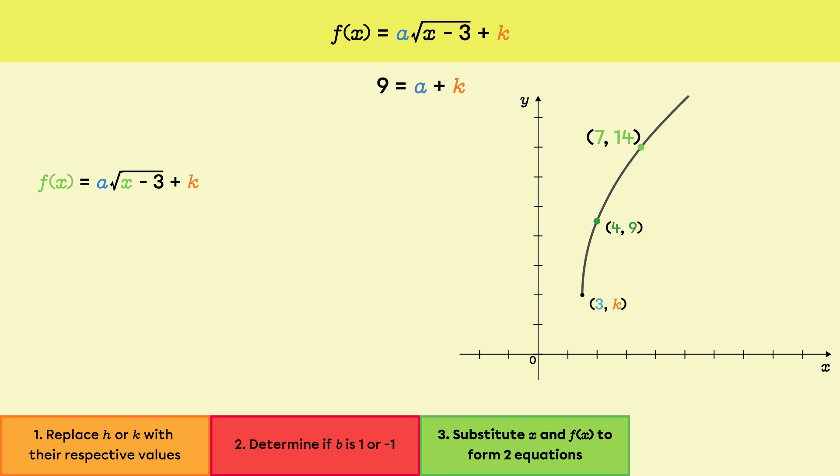Next, we'll do the same thing to form the second equation using the point 7,14. This gives 14 equals a square root of 7 minus 3 plus k. 7 minus 3 is 4. The square root of 4 is 2, so the second equation is 14 equals 2a plus k.